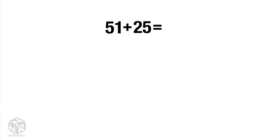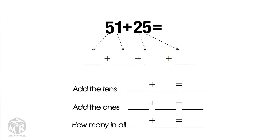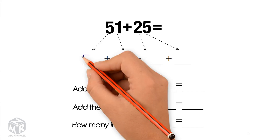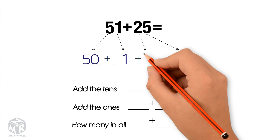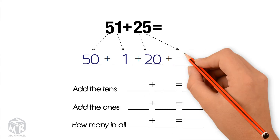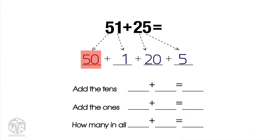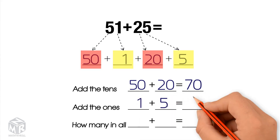Let's try another example: 51 plus 25. 51 breaks into 50 and 1. 25 breaks up into 20 and 5. First, we add the tens: 50 plus 20 equals 70. Now, we add the ones: 1 plus 5 equals 6.